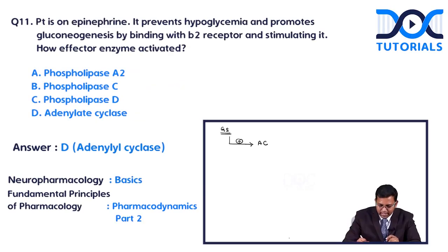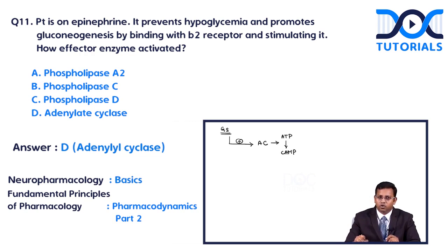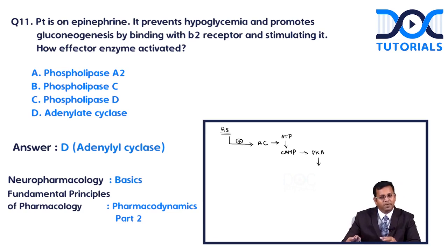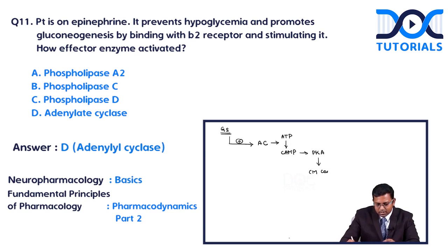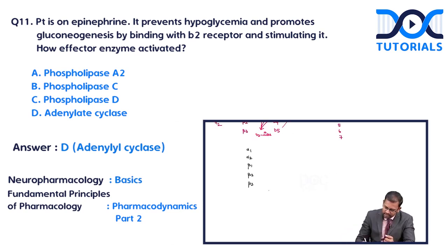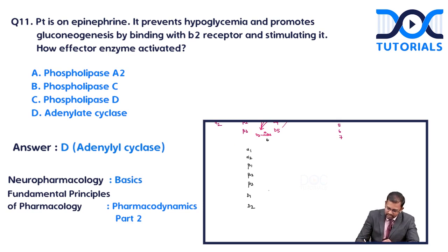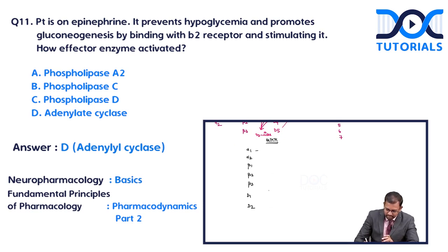When adenylyl cyclase is activated, it converts ATP to cyclic AMP (cAMP). cAMP in turn causes production of protein kinase A, which causes many reactions — most importantly cardiac muscle contraction. Beta, D1-like receptors, and D2-like receptors are all G-protein coupled receptors. All adrenergic and dopaminergic receptors are G-protein coupled receptors.